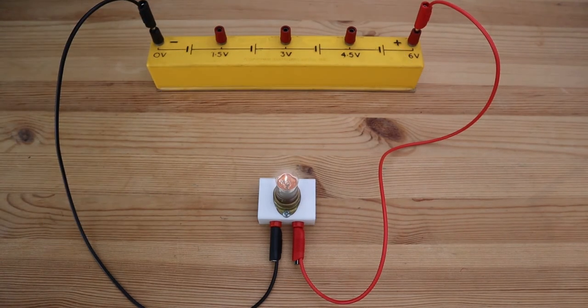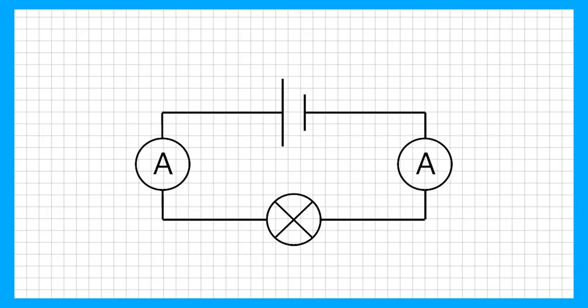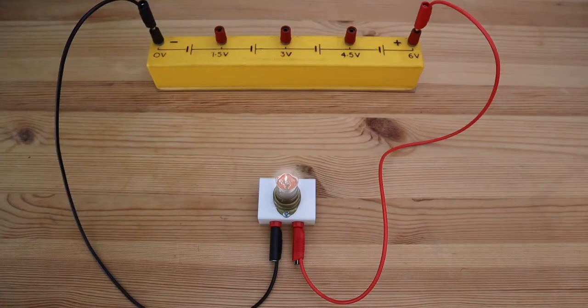What can you say about the electric current at point A and B? To investigate this, we need to connect two ammeters in series with this circuit, one at point A and the other at point B.